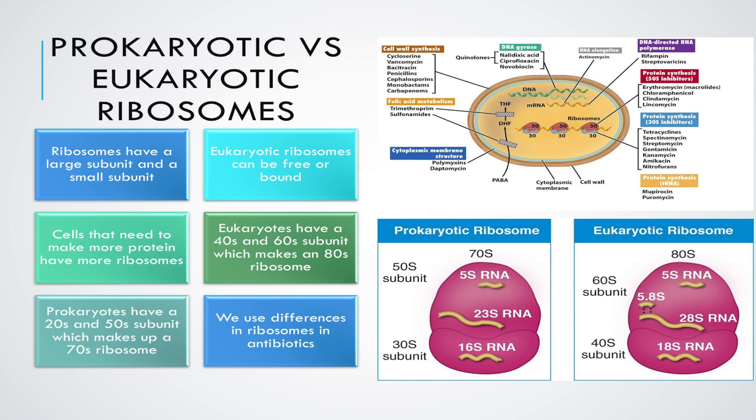You don't have to memorize all of that — that was just to show you why it's important for us to know that prokaryotes and eukaryotes have different ribosomes. We can exploit these differences in ribosomes with certain antibiotics, and that's why it's important that prokaryotic ribosomes differ from eukaryotic ribosomes.